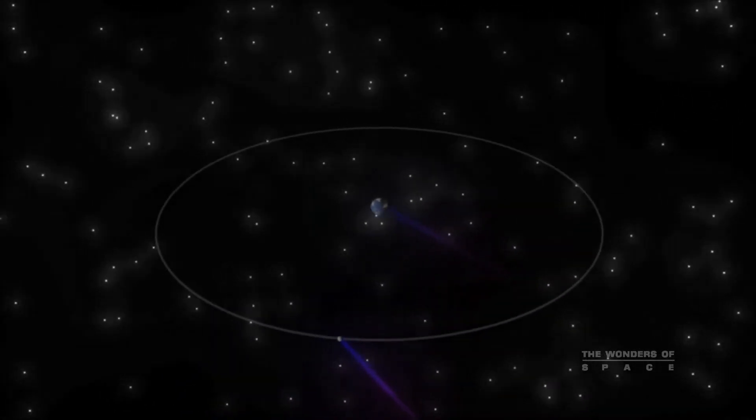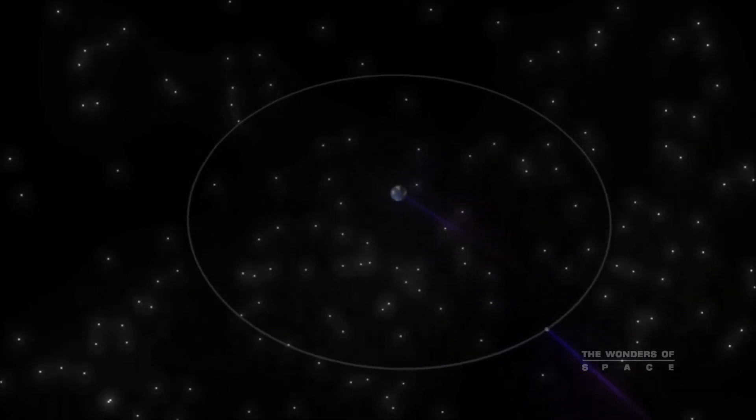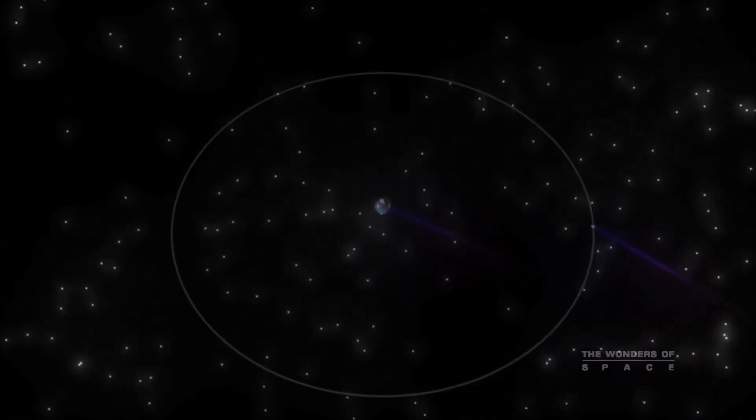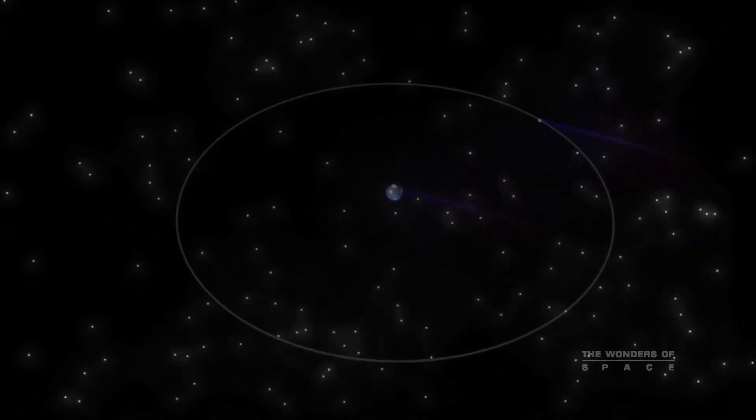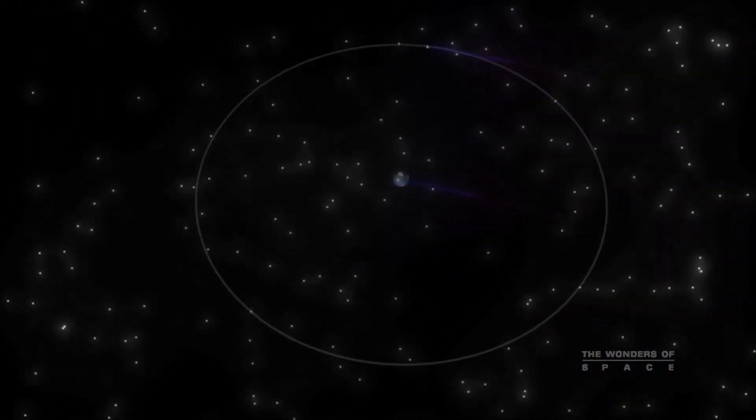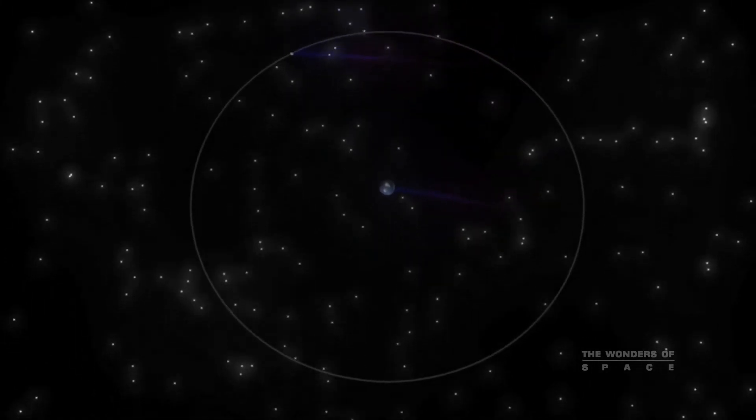Since the Moon circles the Earth, we think of the Moon's motion as circular. But since the Earth-Moon system revolves around the Sun at about 65,000 miles per hour, the Moon's motion in the Solar System isn't much different from our own.